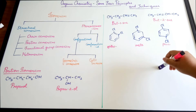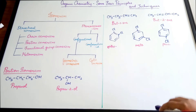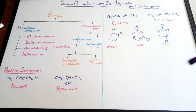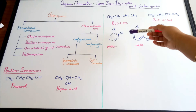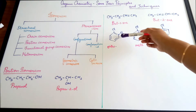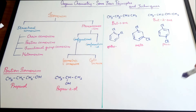Another example is ortho, meta, and para dichlorobenzene. All three compounds have the same molecular formula C6H4Cl2 — two hydrogen atoms in benzene are substituted with chlorine, but the positions differ. Ortho is 1,2-substitution; meta is 1,3; and para is 1,4. So positional isomers have the same molecular formula but differ in the position of the functional group.